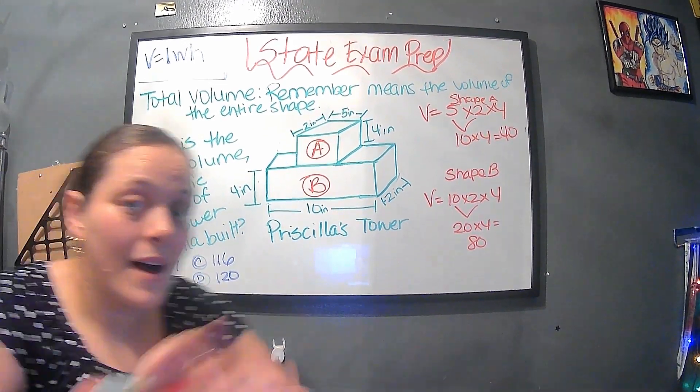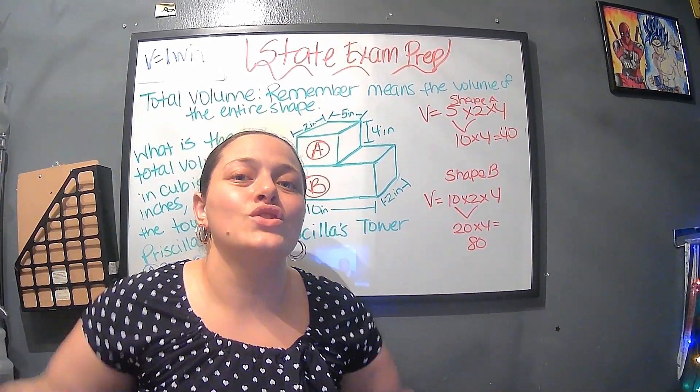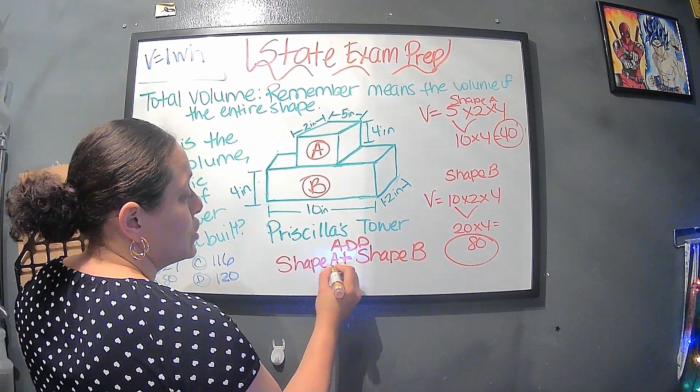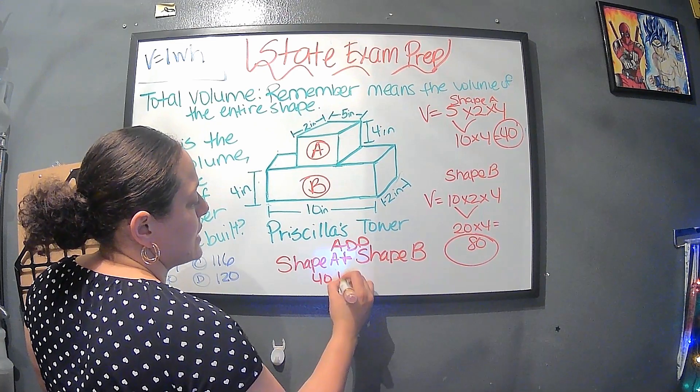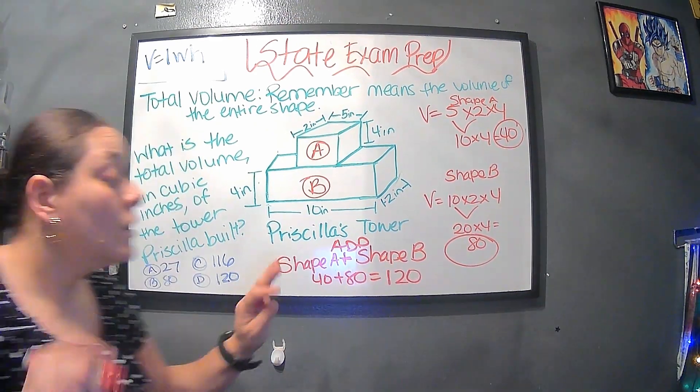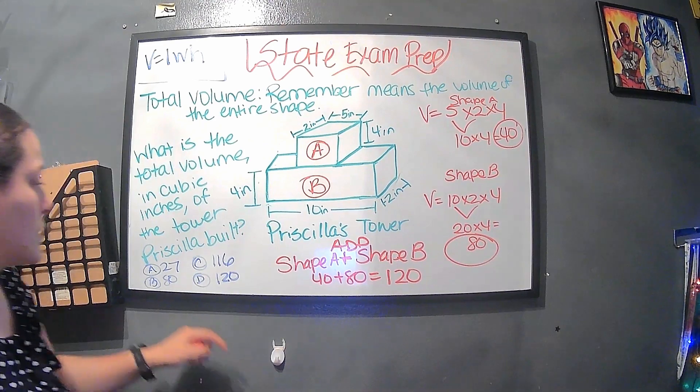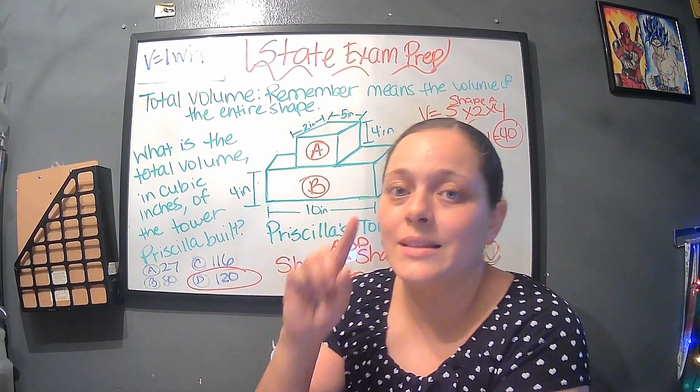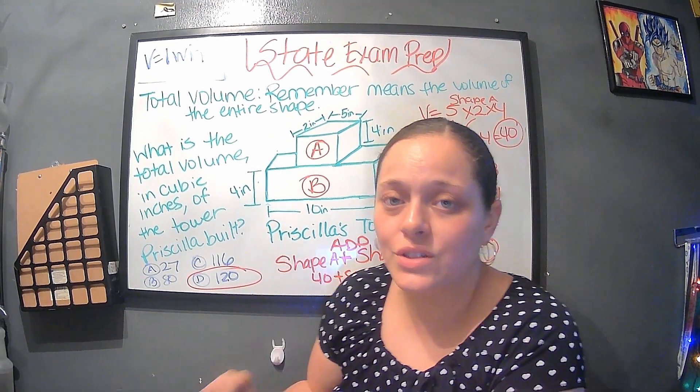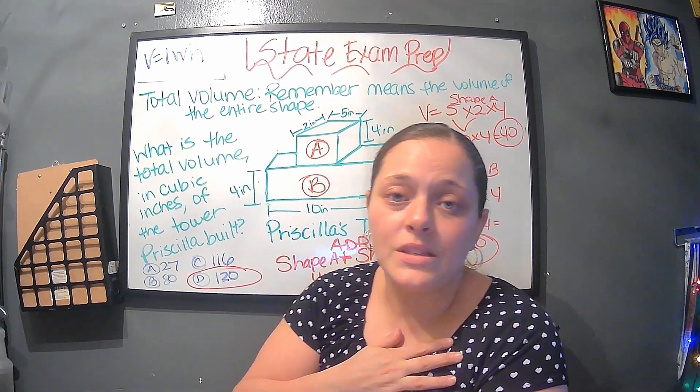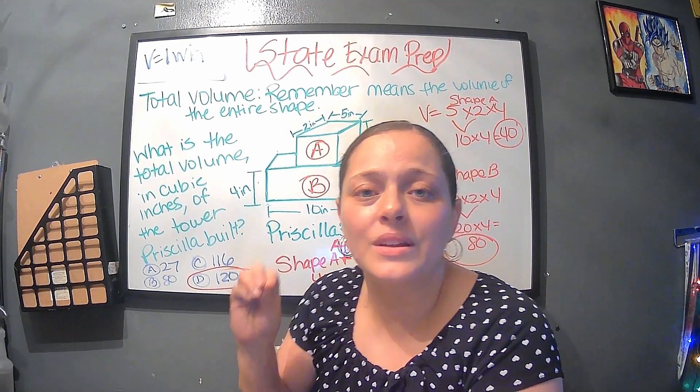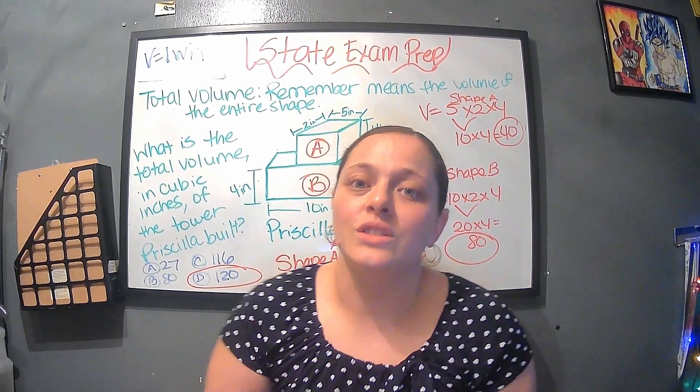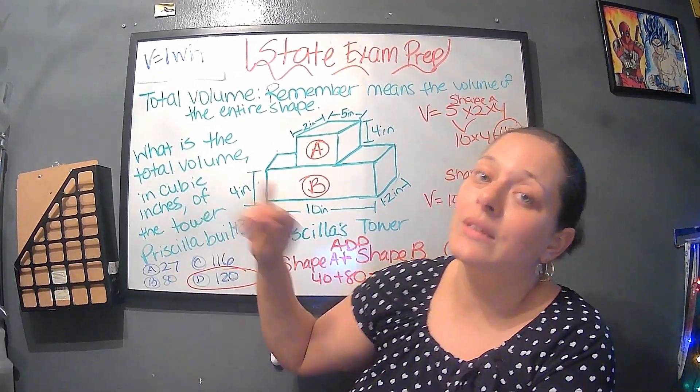Now the next part, we found the volume. But now in order to find the total volume, this is where you have to remember, you have to add shape A equals 40 plus 80 from shape B. 40 plus 80 equals 120. And guess what? Boom, right there, D. Always make sure and double, triple check the correct answers. And make sure you put them on your test correctly. That's happened to me numerous times that I thought I put a C and I put a B. So I just want you to remember that when you're doing these multiple choice questions, make sure that if you meant to put D that you did not put B.